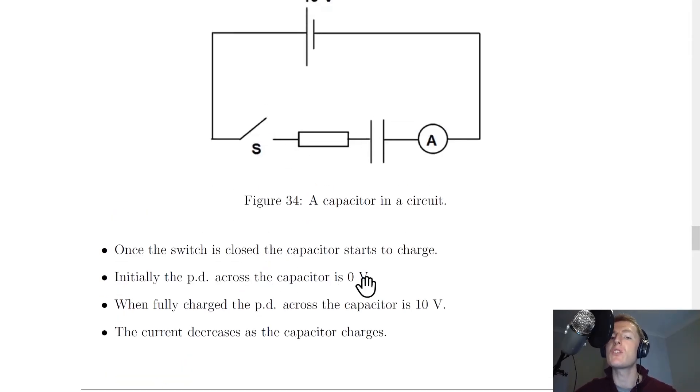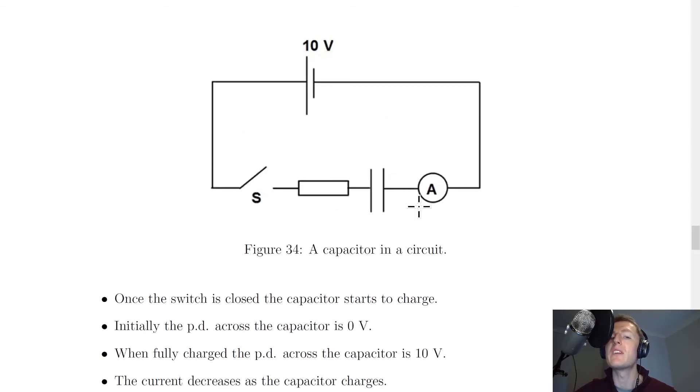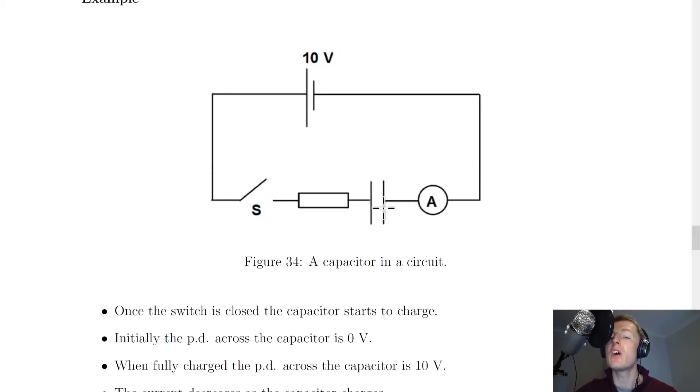Initially, the potential difference across the capacitor is zero volts when the switch is open. But when it's fully charged, the potential difference across the capacitor is 10 volts. Remember, we've said that when the capacitor is fully charged, the potential difference across it will be the same as the potential difference of the supply.